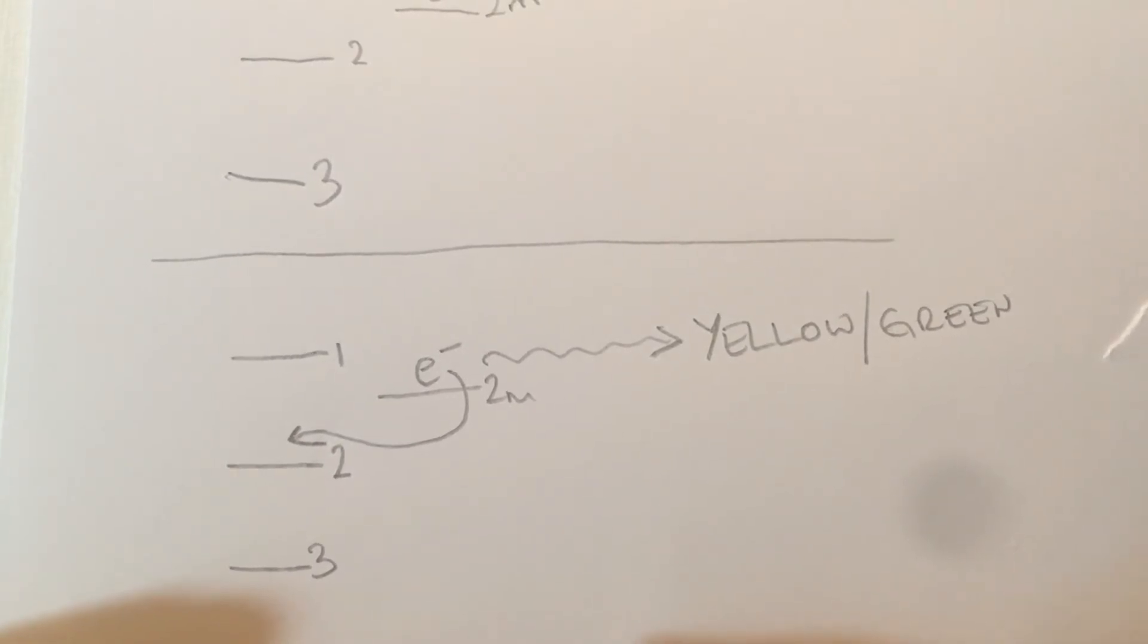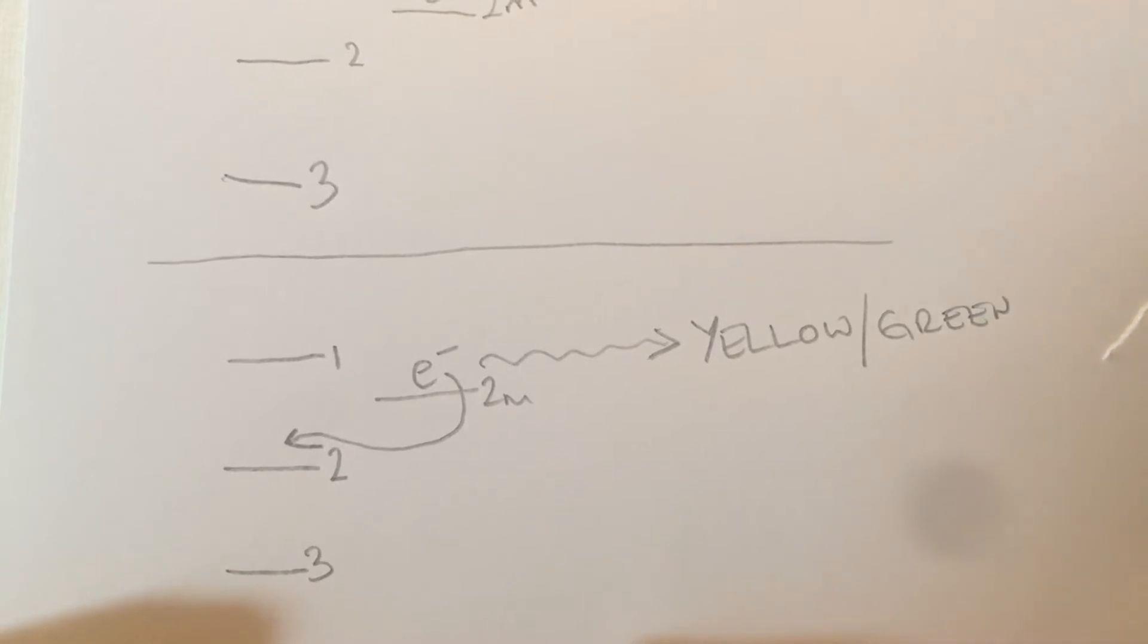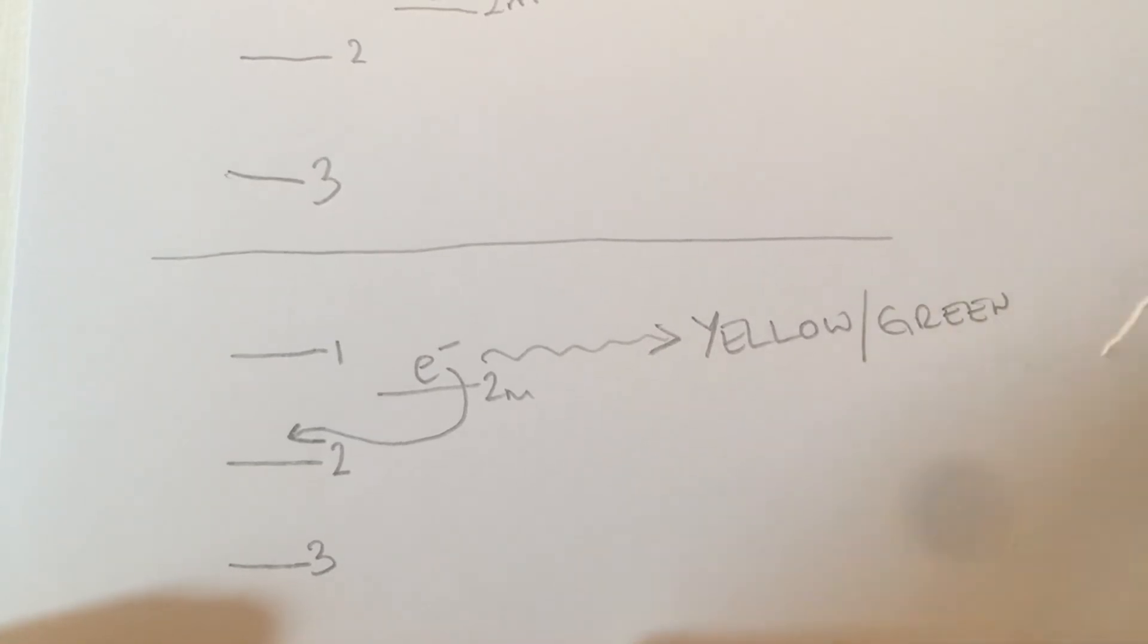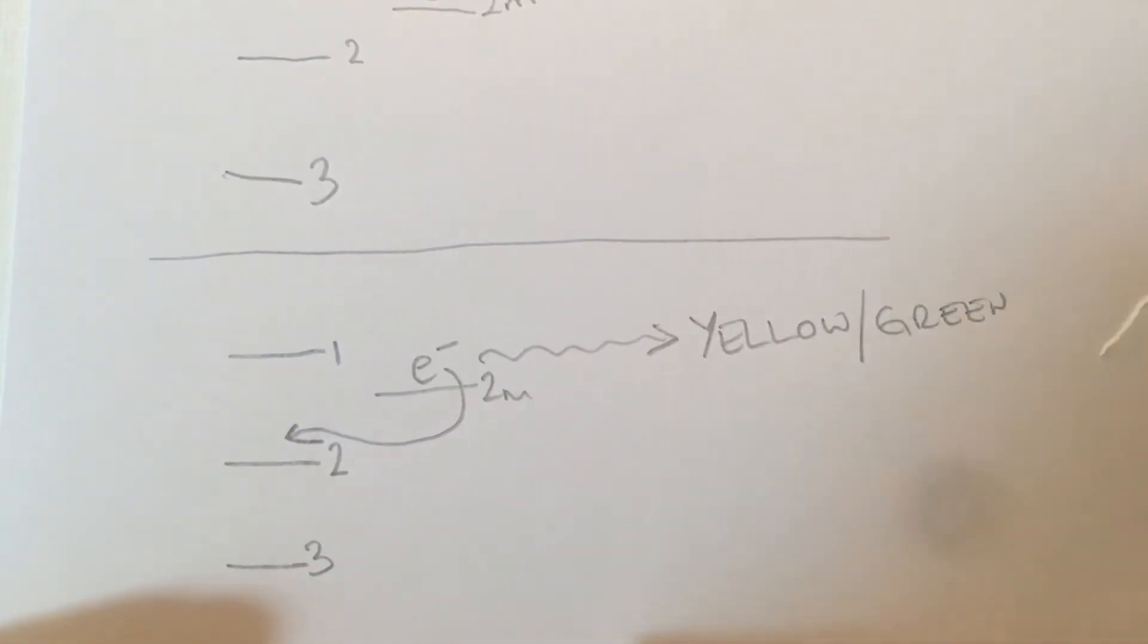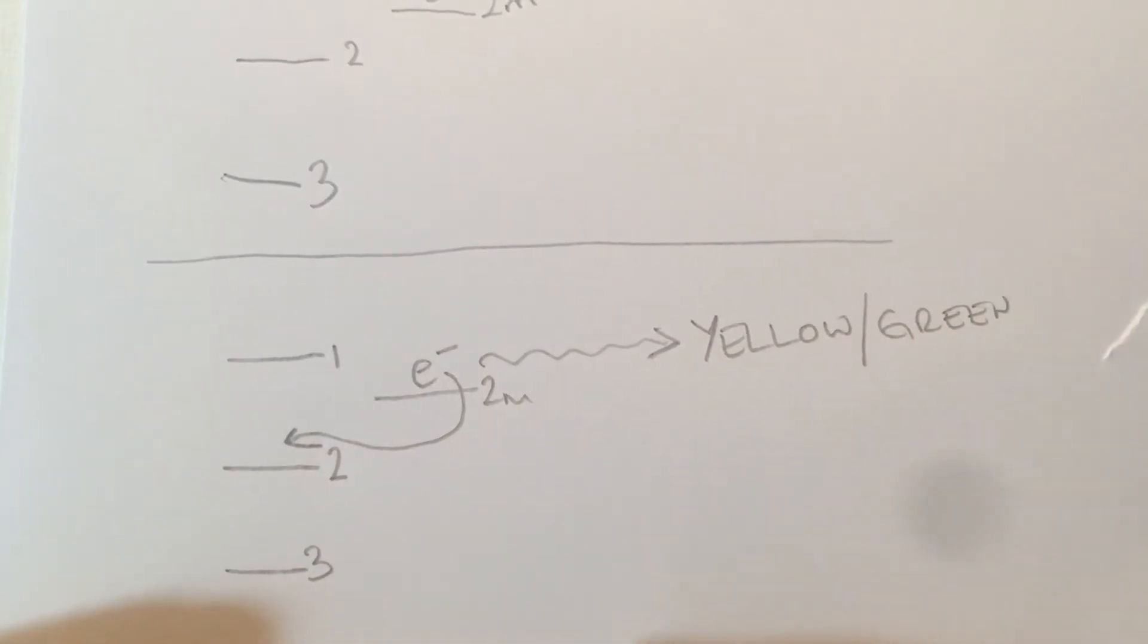It excites with ultraviolet light, and what I'm going to do is I'm going to shine ultraviolet on it now and show you what happens. Now what we're going to see is a fluorescence at first. We're going to see a bright green-yellow glow. And then when I turn off the UV, you'll see a phosphorescence which continues after the light has been removed. So fluorescence is only active as long as the exciting light is present. Phosphorescence is the one that starts when you turn off the exciting light and continues.